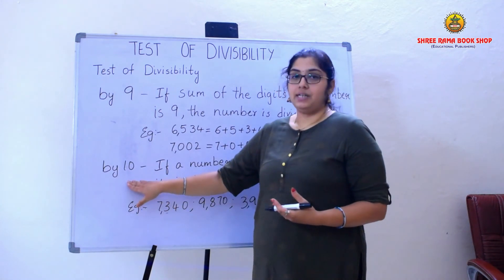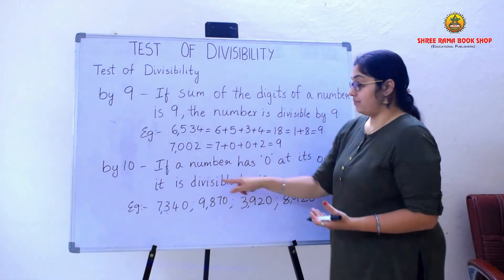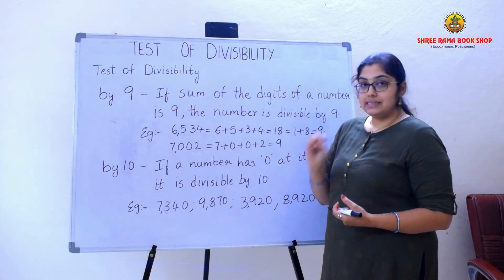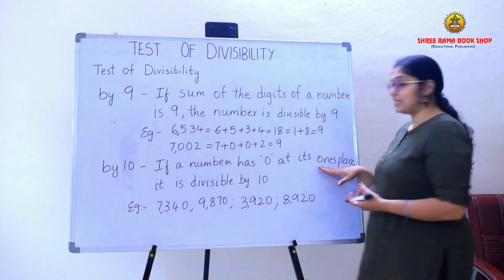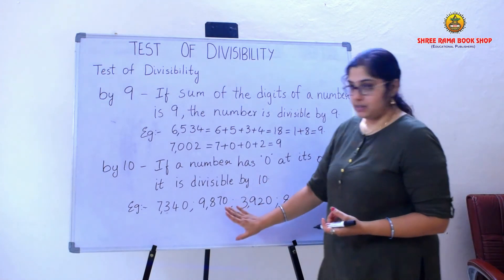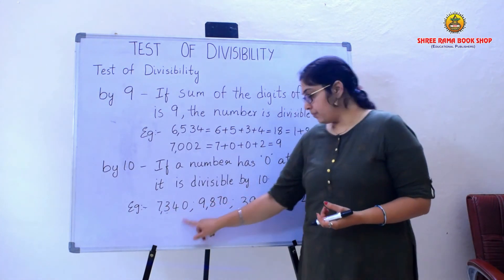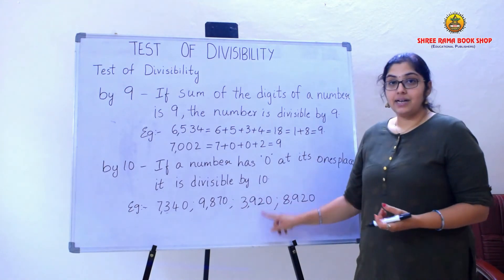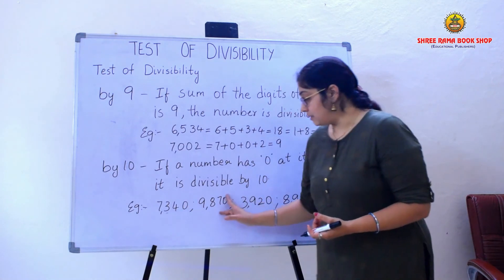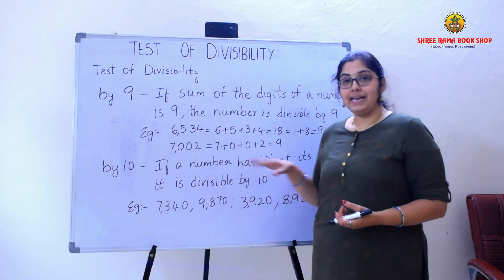Now we will move on to divisibility rule of 10. If a number has 0 in its 1's place, it is divisible by 10. So if a number is having 0 in the 1's place, I can directly say by seeing the number that it is divisible by 10. For example: 7,340; 9,870; 3,920; and 8,920 all have 0 in the 1's place, so all these numbers are divisible by 10.